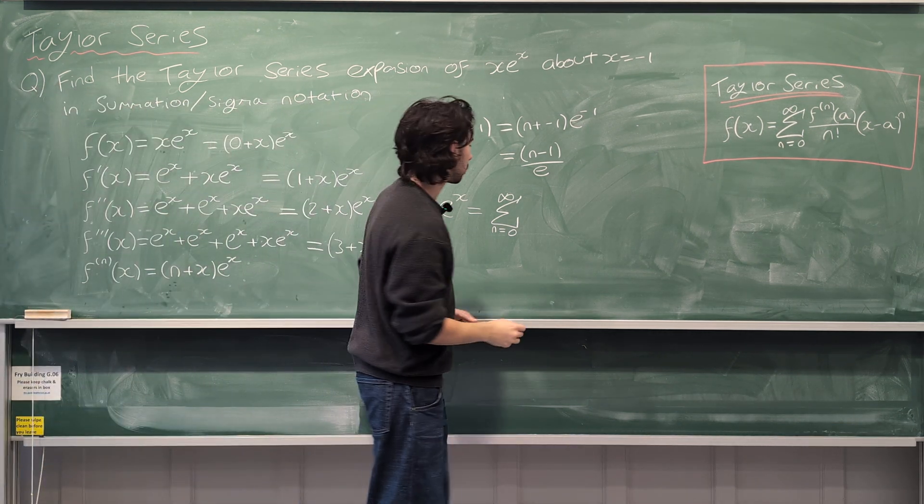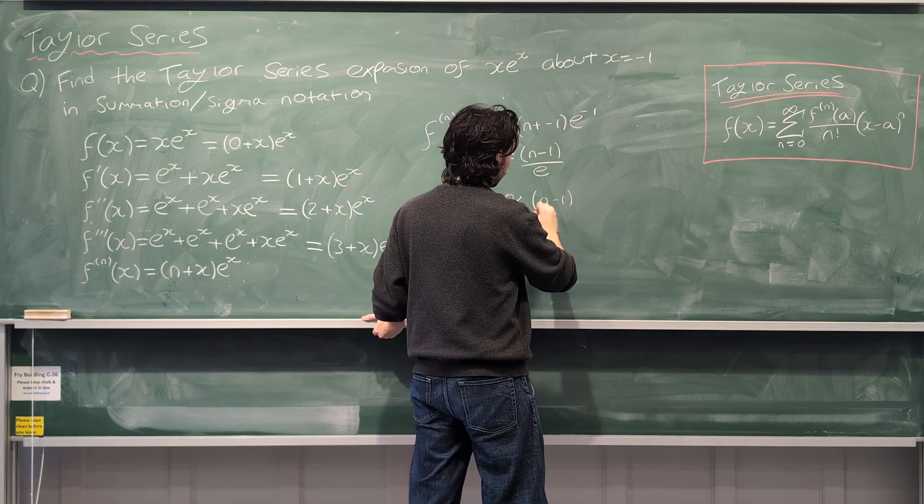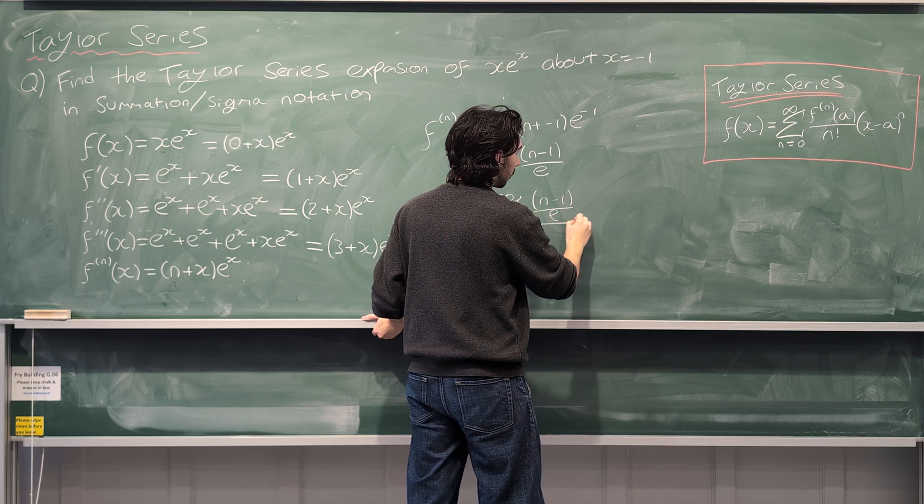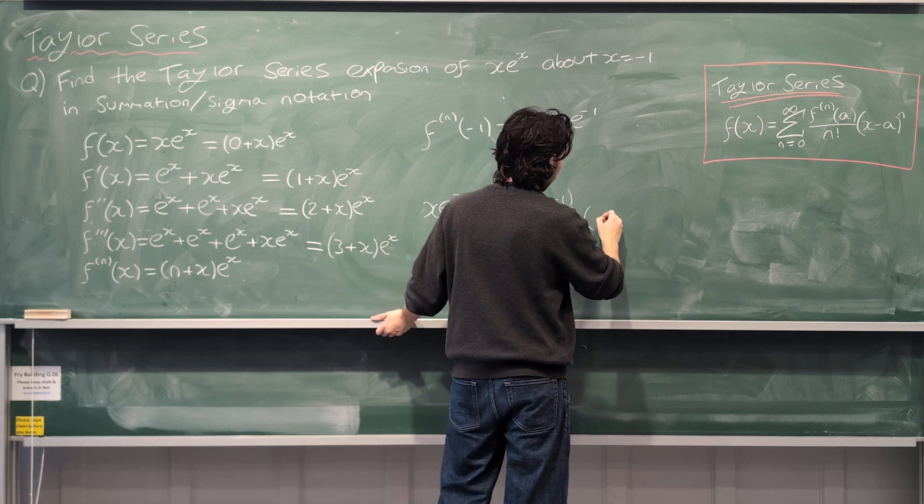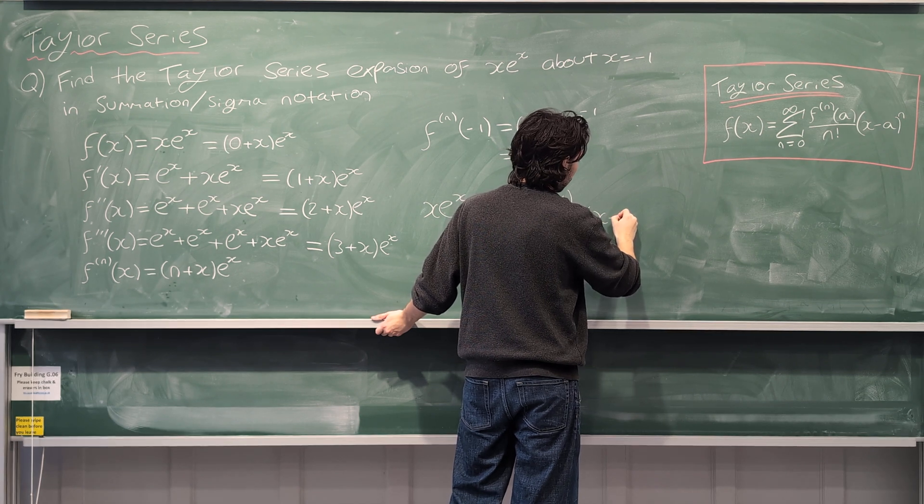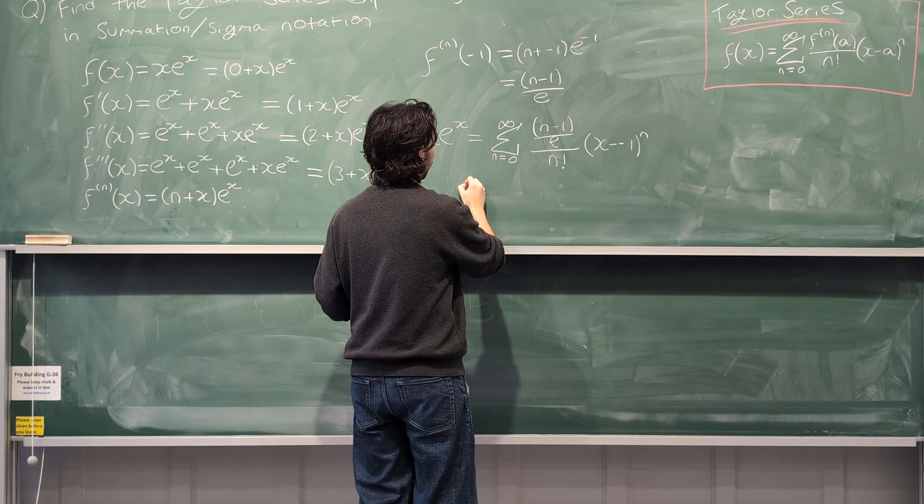And that's what we have. So we have (n-1)/e divided by n factorial times (x - minus 1) to the n. And we're going to simplify this a little bit more.